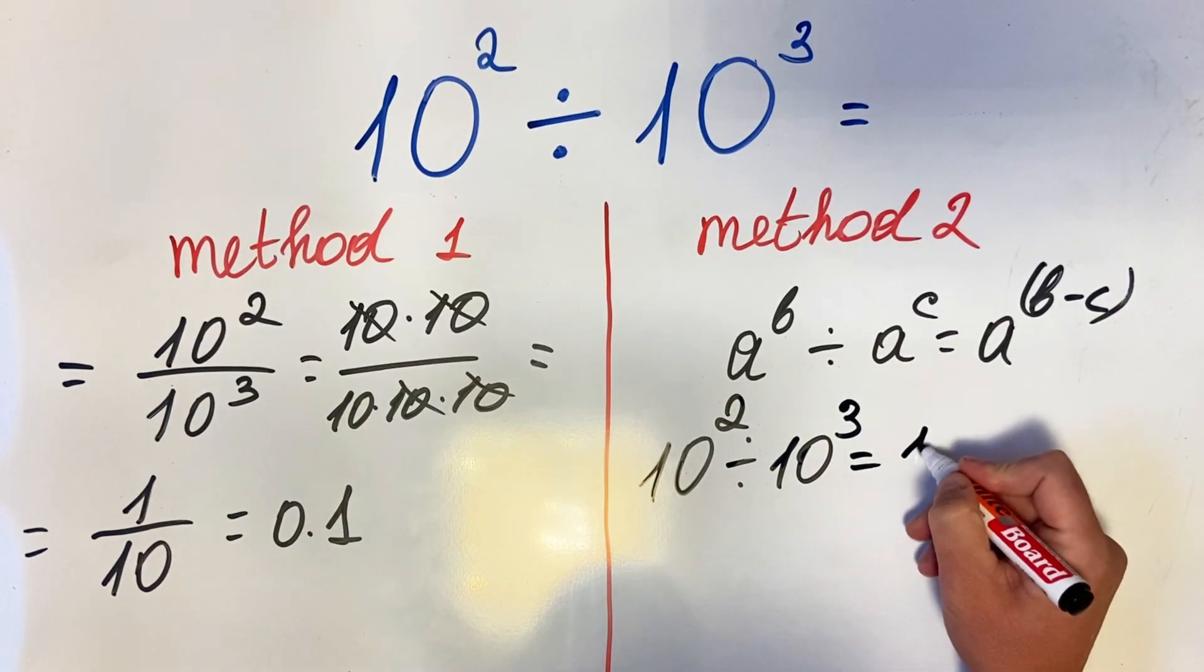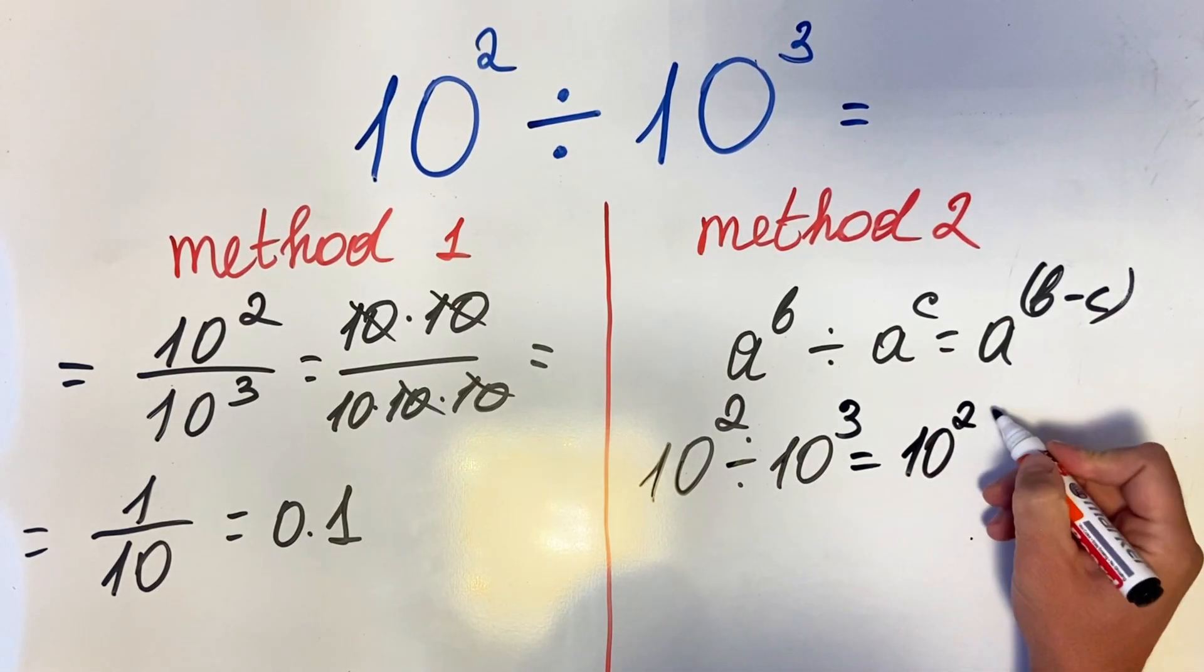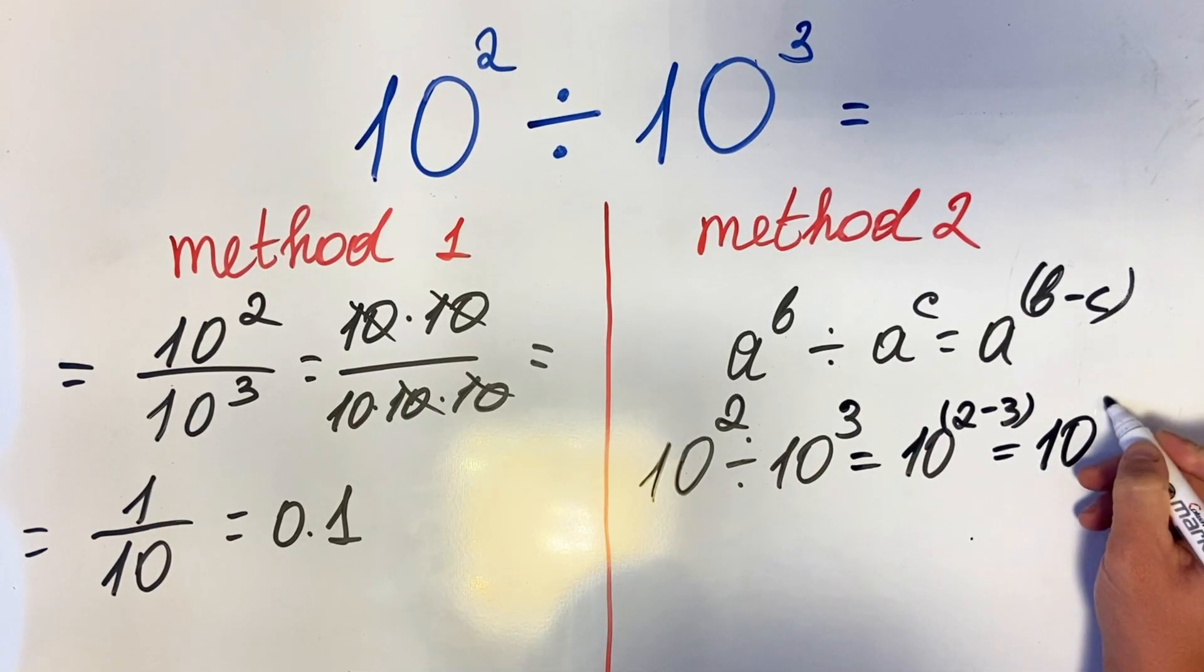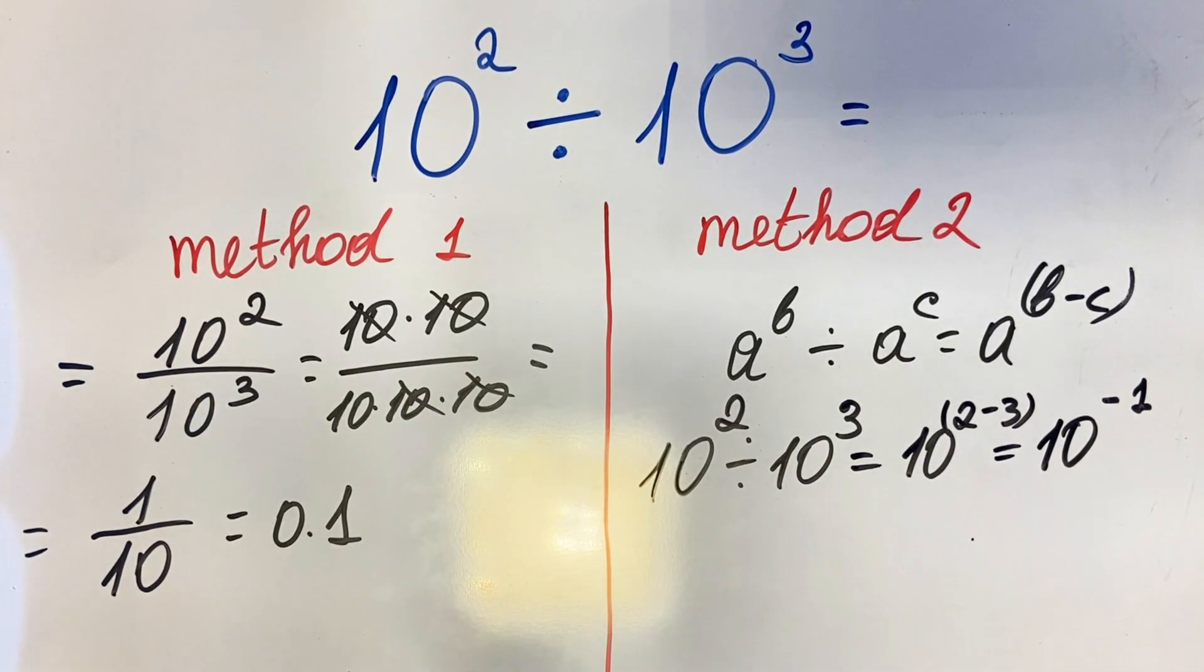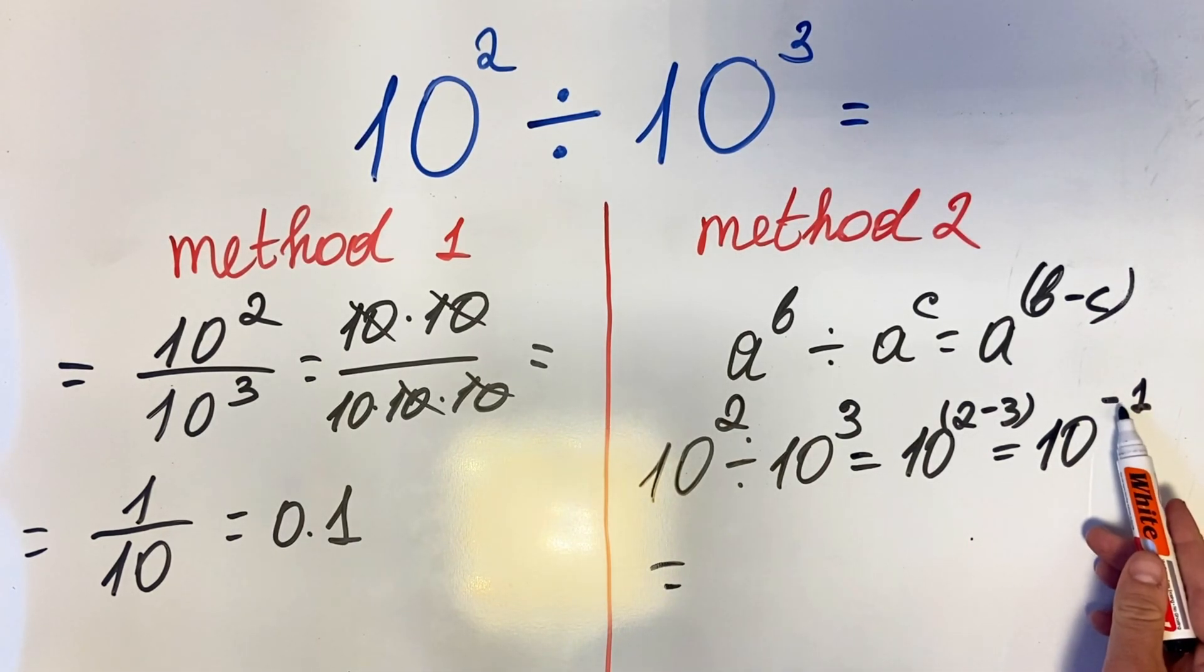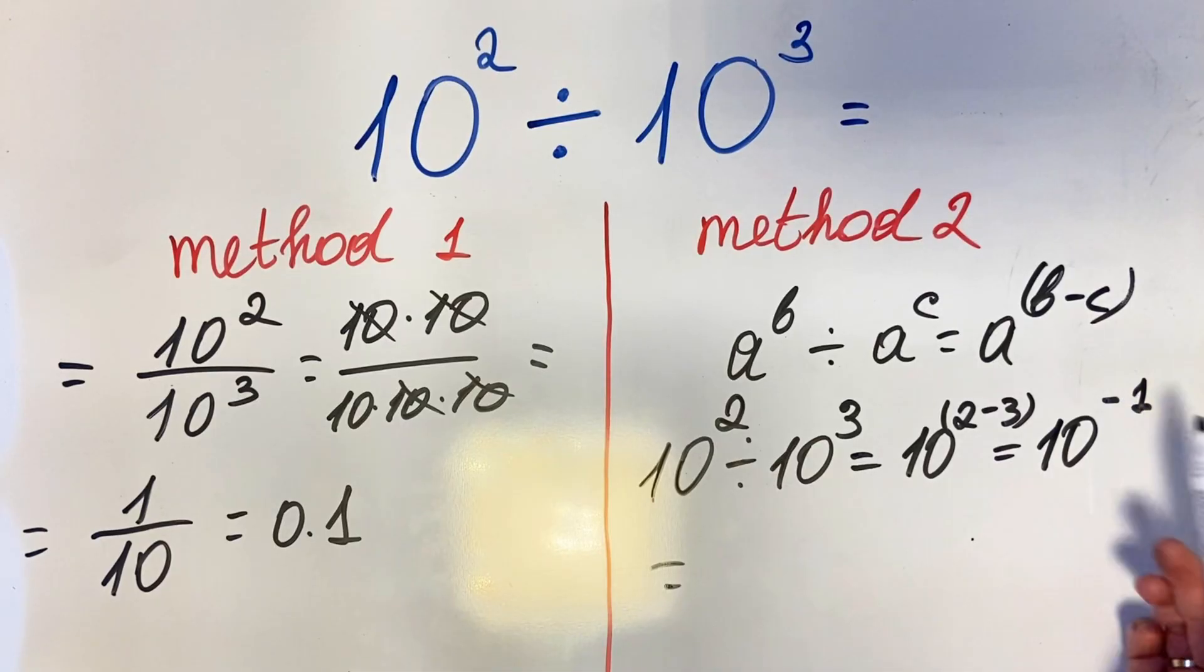There is a rule when you have a negative exponent: to get rid of the negative, you flip the number and put it in a fraction. So 10 to the minus 1, to get rid of the